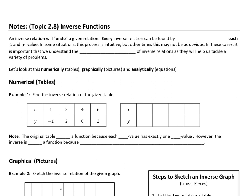Every inverse can be found by switching each x and y value. In some situations, this process is intuitive — the opposite of addition is subtraction, multiplication is division, squaring is square root. A lot of that makes sense. However, sometimes it may not be as obvious what you do to create an inverse function.